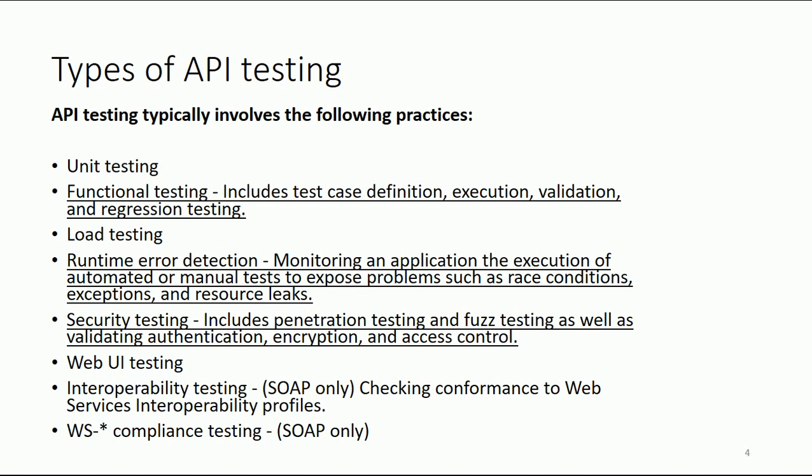One more type of API testing is security testing, which includes penetration testing and fuzzy testing, as well as validation, authentication, encryption, and access control — all of these need to be tested with the API. And the next one is web UI testing, where we normally do testing with Selenium — we check the interaction and we check the response code. We can also do it with some other manual tools.